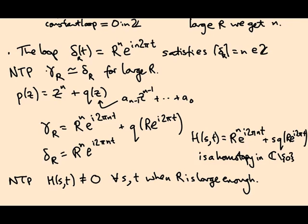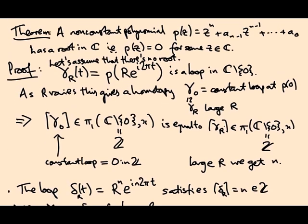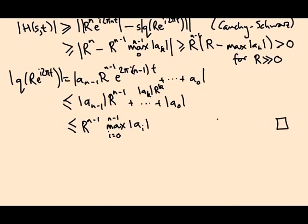Looking back, that means that the winding number, the element of the fundamental group represented by gamma r is the same as the element represented by delta r, and I claim that's equal to n. And looking back, because gamma r is homotopic to gamma zero, that means n has to be equal to zero. That means the polynomial has to be a constant polynomial, and we got that by assuming that there's no root. So if there is a root, it has to be, I'm sorry, if there's a non-constant polynomial, there has to be a root.